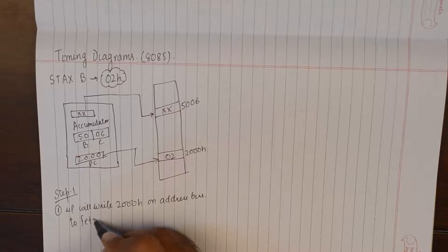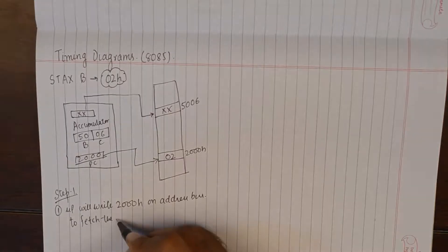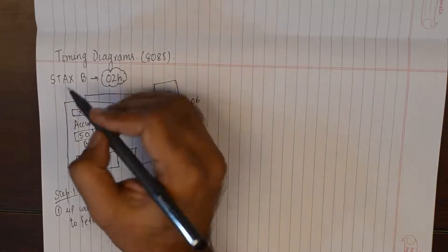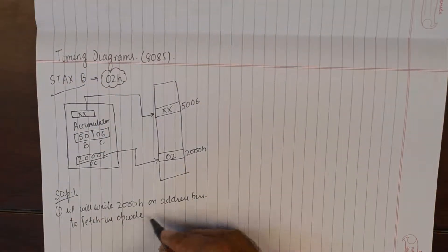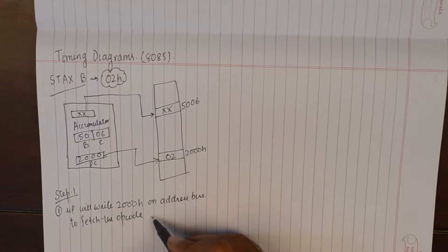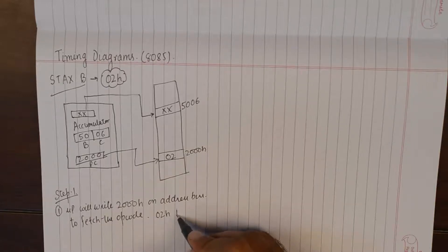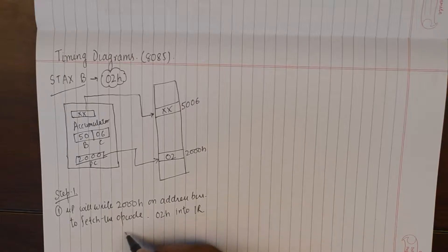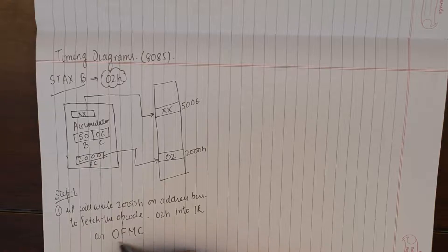Now fetching the opcode for STAX B would mean that it will bring 02H into instruction register as opcode fetch machine cycle.